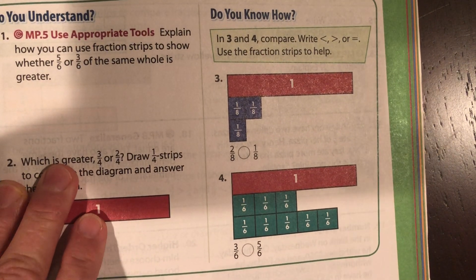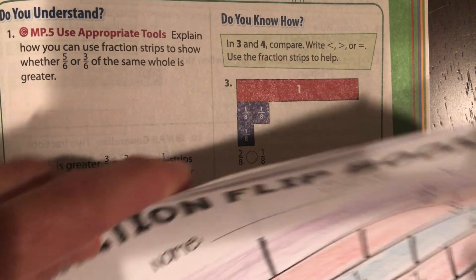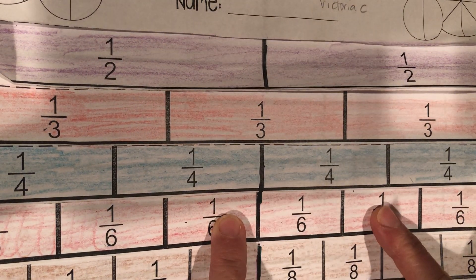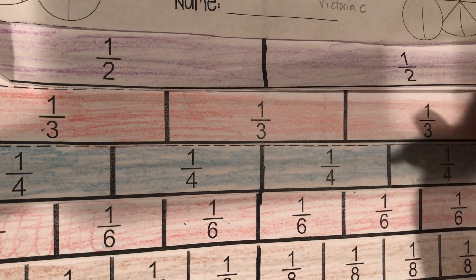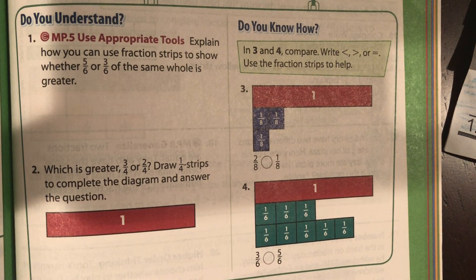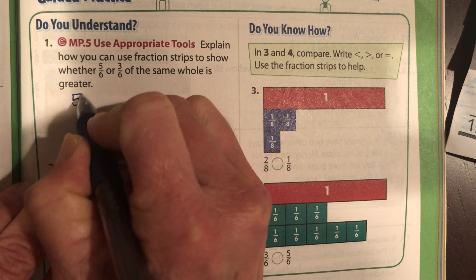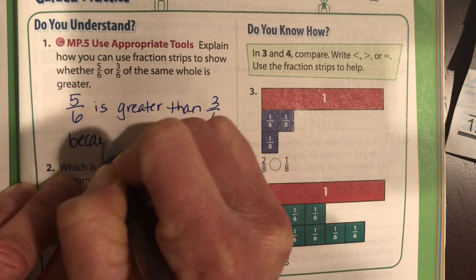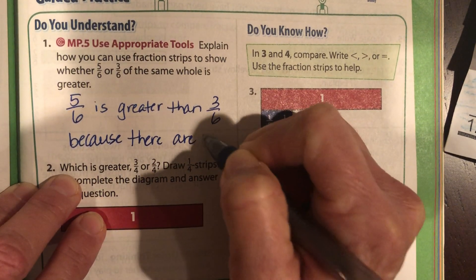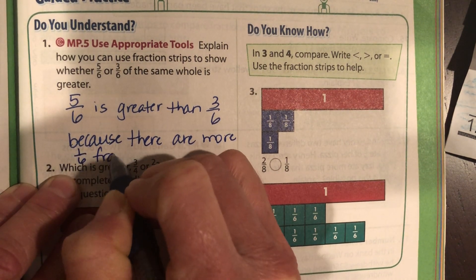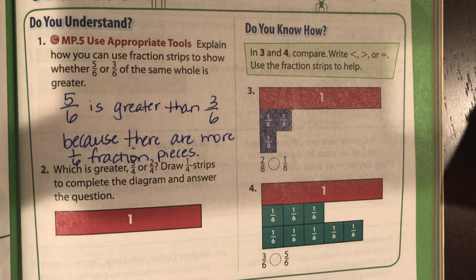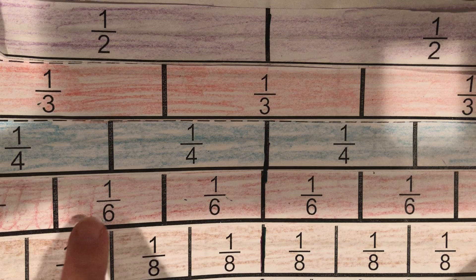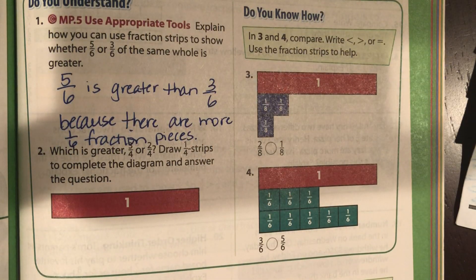Explain how you can use fraction strips to show whether five-sixths or three-sixths of the same whole is greater. We want three-sixths compared to five-sixths. So here are six. One, two, three. There's three-sixths and there's five-sixths. Clearly five-sixths is more than just three of them. So how could we explain that? Five-sixths is greater than three-sixths because there are more one-sixth fraction pieces. Each one of these is one-sixth. Obviously five of them is going to be more than just three of them.